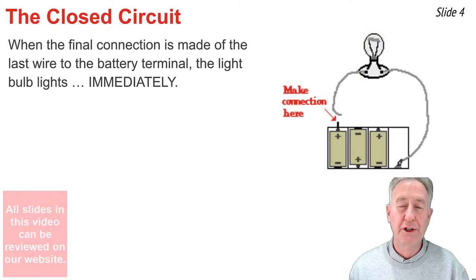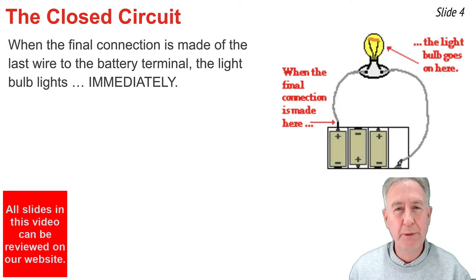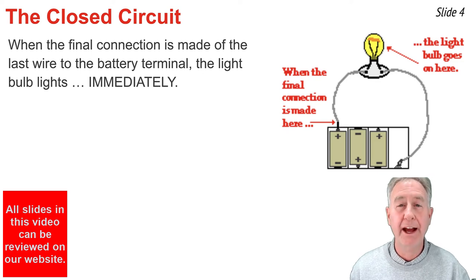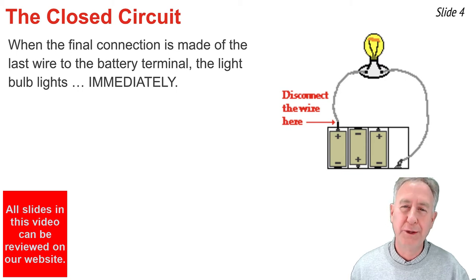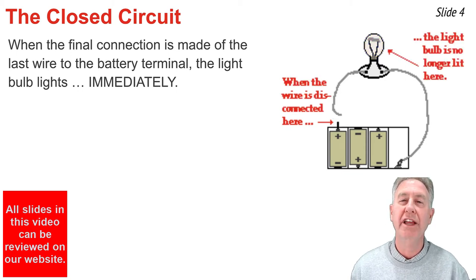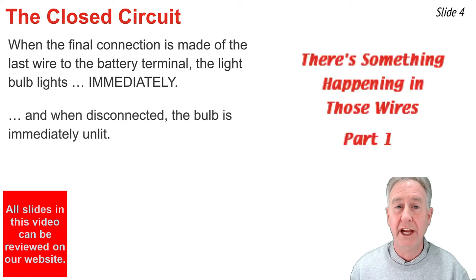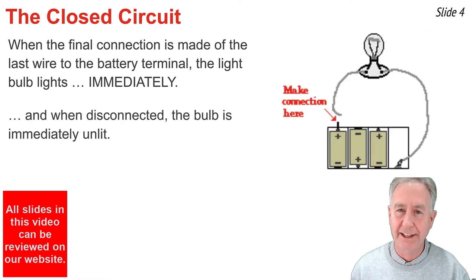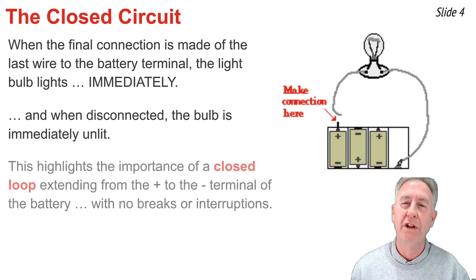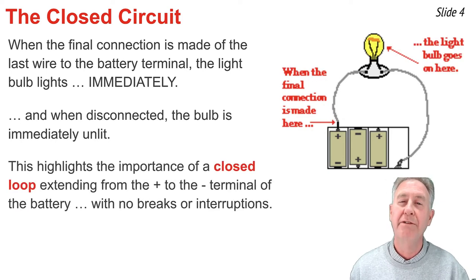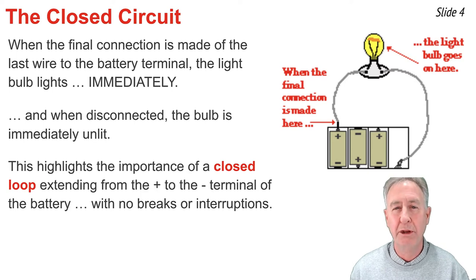If you're a physics student, you're probably accustomed to the use of equipment shown here — a pack of electrochemical cells, which we call a battery pack, a couple of wires, and a light bulb. When the final connection is made of that last wire to the terminal of the battery, we notice that the light bulb lights immediately. And when it's finally disconnected, we notice the light bulb is unlit immediately. This highlights the importance of a closed conducting loop that extends from the positive terminal to the negative terminal of the battery.